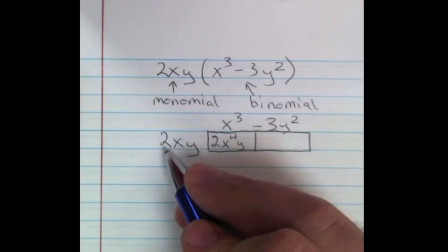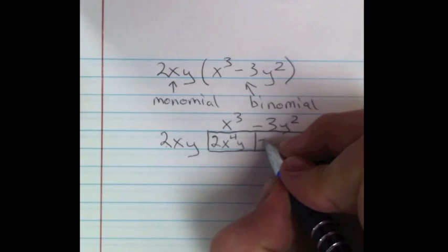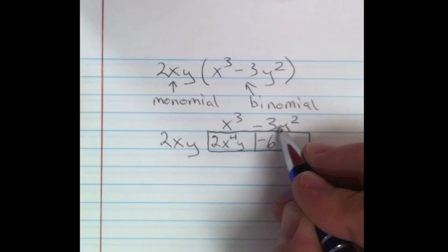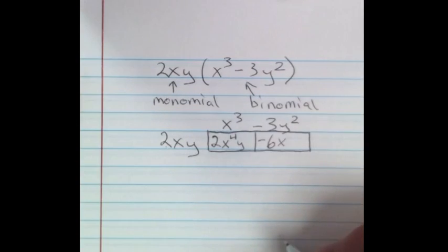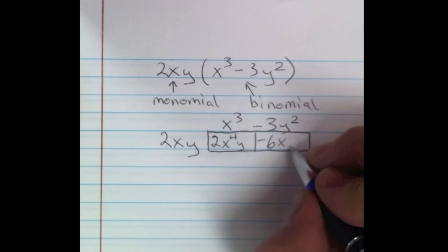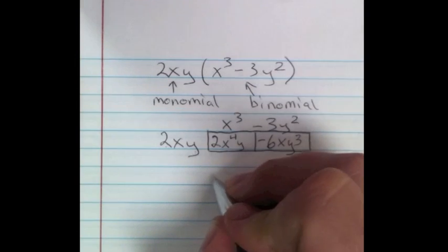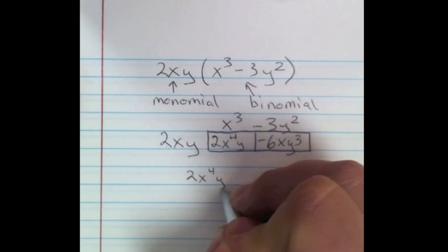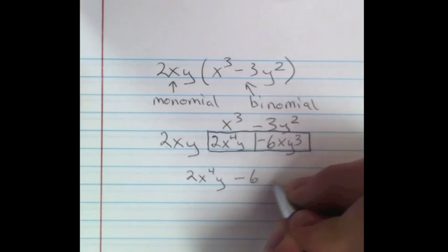And then in the second box, our coefficients when we multiply them we get negative 6, and we only have an x and then we have y to the 3rd. So that means our solution will be 2x to the 4th y minus 6xy to the 3rd.